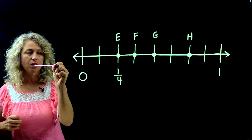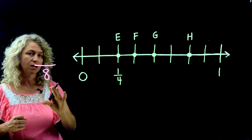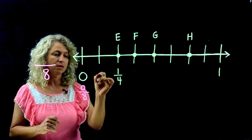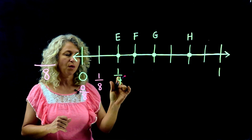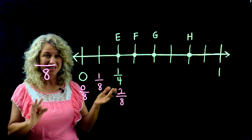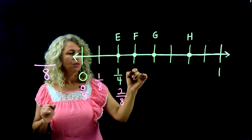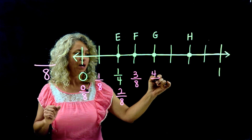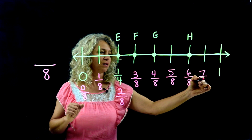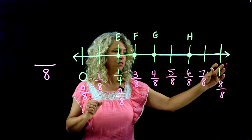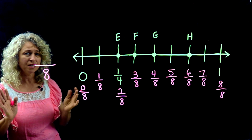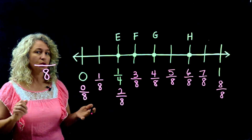Eight equal spaces tells you the denominator is eight. So label: zero eighths, one eighth, two eighths — and two eighths is an interesting situation because it's also labeled one fourth, which means the same thing. Continue: three eighths, four eighths, five eighths, six eighths, seven eighths. Eight eighths means the same as the whole number one. Now the number line is labeled and we can answer questions.